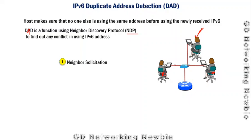The host asks the other machines on the network whether anyone else is using the exact same IPv6 address that it has been assigned. Using the Neighbor Solicitation (NS) message — part of NDP — it asks everybody. The remaining host machines on the network, upon receiving this Neighbor Solicitation message, have a responsibility to respond if they are using the same IPv6 address.